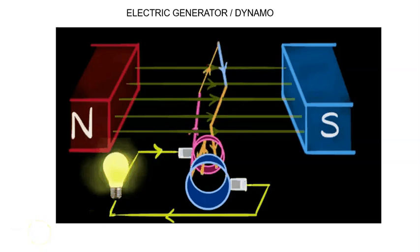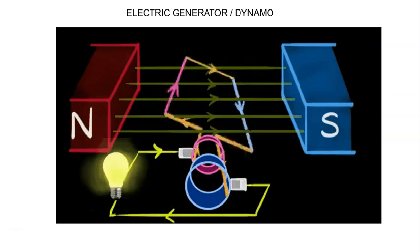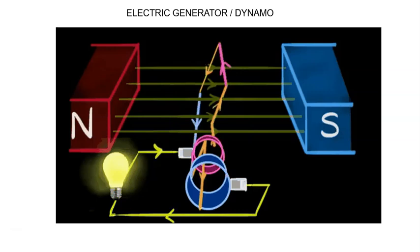We can see in this animation that direction of flow of current is changing after every half rotation. This armature coil rotates and when the armature coil rotates, the magnetic field is changing. When the magnetic field associated with the coil is changing, induced current is produced and the bulb is glowing.